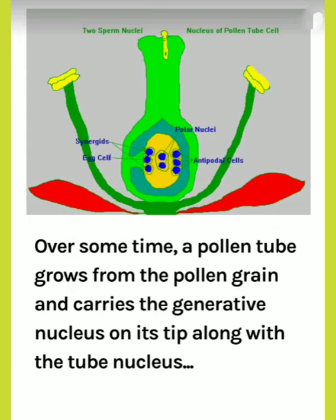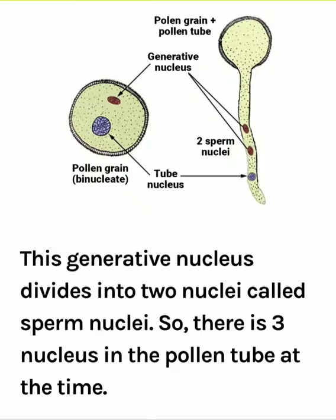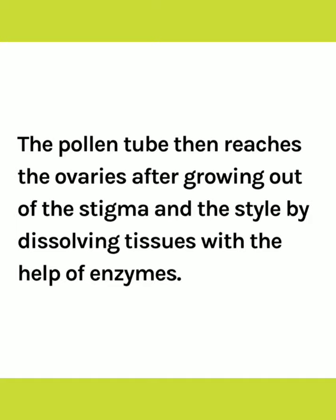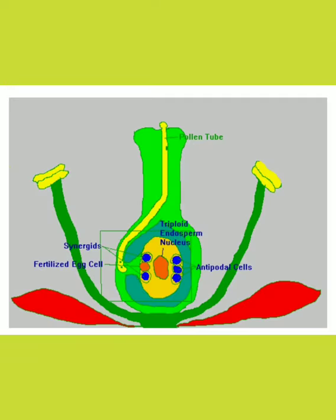Then a pollen tube grows out of the pollen grain by breaking through its outer covering called exine. The generative nucleus divides into two nuclei, that is male gamete nuclei, also called sperm nuclei. Thus there are three nuclei, which are not separated by cell walls — they share a common cytoplasm, as you can see in the figure. A yellow pollen tube grows downwards, reaching the ovaries after growing out of the stigma and the style by dissolving tissues with the help of enzymes.